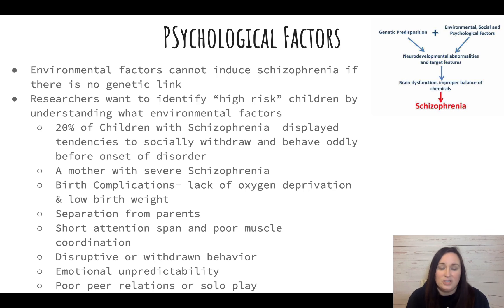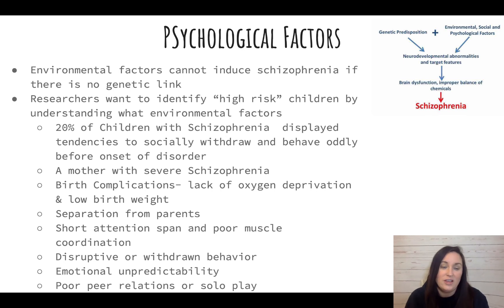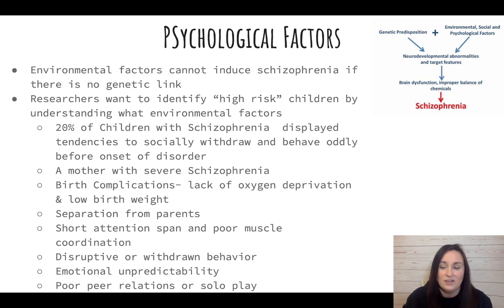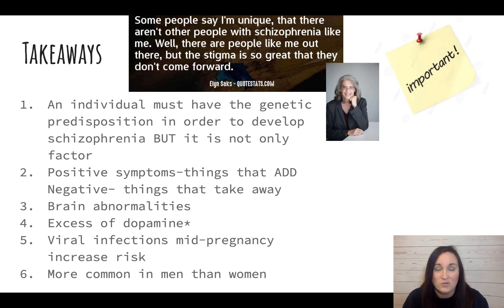Researchers want to identify high-risk children by understanding these environmental factors. Flags identified include: social withdrawal or odd behavior early on, a mother with severe schizophrenia, birth complications like oxygen deprivation or low birth weight, early separation from parents, short attention span or poor muscle coordination, disruptive or withdrawn behavior, emotional unpredictability, and poor peer relations or preference for solo play. One flag alone doesn't mean anything — it's the combination that matters.